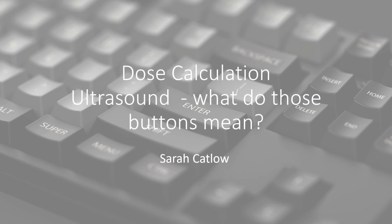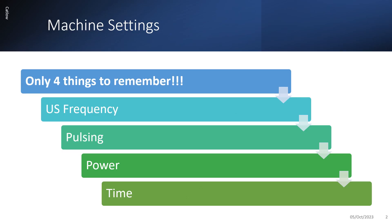Hello. In this presentation we're going to go through dose calculation of a therapeutic ultrasound machine — what do those buttons mean on the machine and how do we set it up effectively for our patient and the condition that we're working with. So the machine settings: there are only four things to remember when setting up an ultrasound machine — the frequency, the pulsing or continuous, power and time.